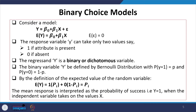Binary responses follow a Bernoulli distribution. When we have binary responses, the distribution called Bernoulli applies with probability p for y equal to 1 and 1 minus p for y equal to 0. By the definition of expected value of a random variable, the expected y equals 1 times p_i plus 0 times 1 minus p_i, so the expected value of the dependent variable is simply the probability p_i.